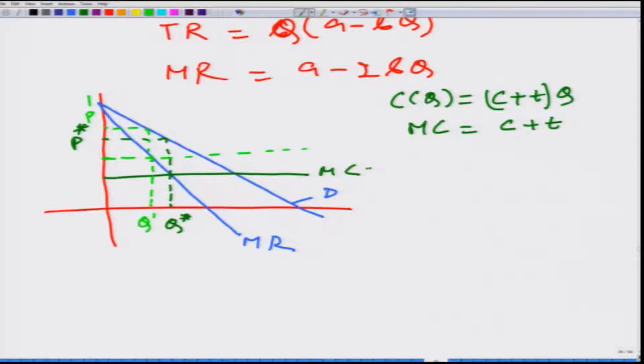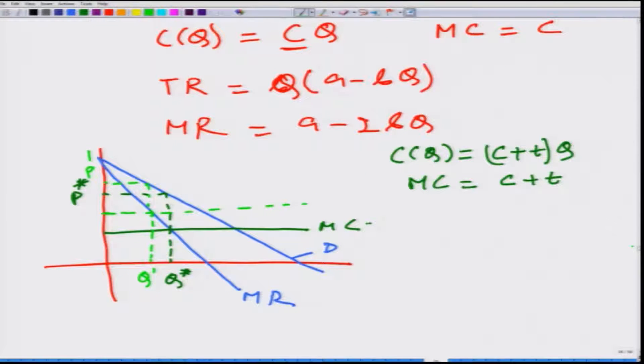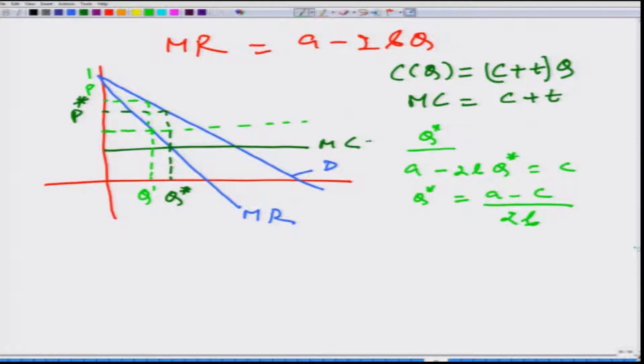If we want to calculate Q*, we have to equate marginal revenue which is a - 2bQ* with the marginal cost which was originally at c. So Q* is going to be (a-c)/2b, and therefore the price P* = a - bQ*. We plug this value: a - b(a-c)/2b. This b will get cancelled, and what we get is P* = (a+c)/2.